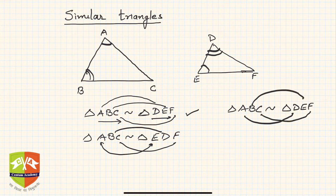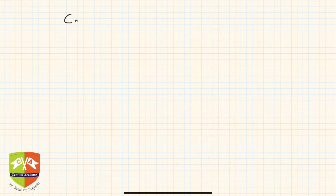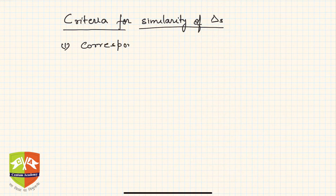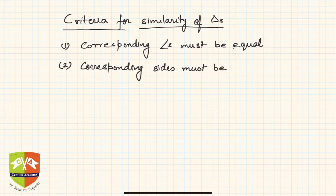Coming to the conditions for similarity of triangles — the criteria are the same as studied in the last session. There are two criteria: first, corresponding angles must be equal; and second, corresponding sides must be proportional.